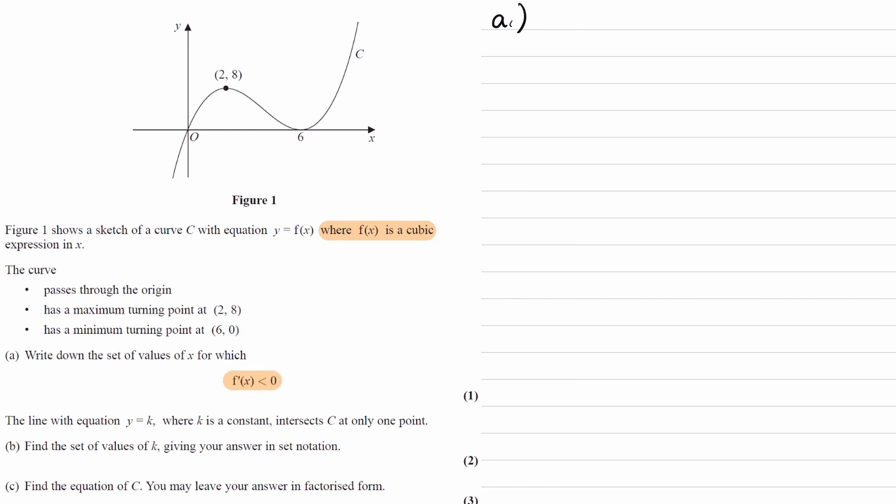So if we look at our graph, the region where the gradient is 0 is this bit here. So between x-coordinate of 2 and x-coordinate of 6, the gradient there is negative. So our answer for part A would be 2 is less than x, which is less than 6. That would satisfy this inequality here, where the gradient is said to be negative.